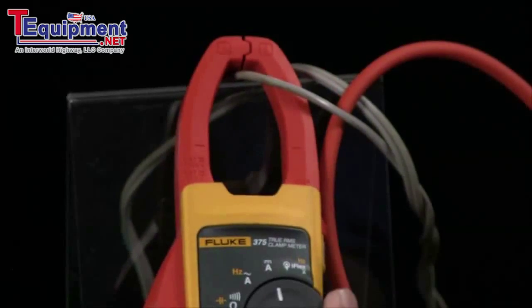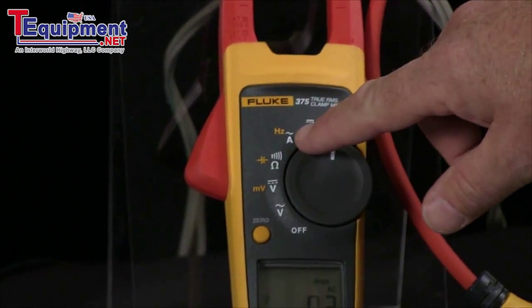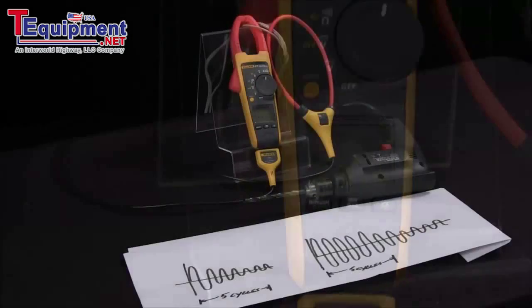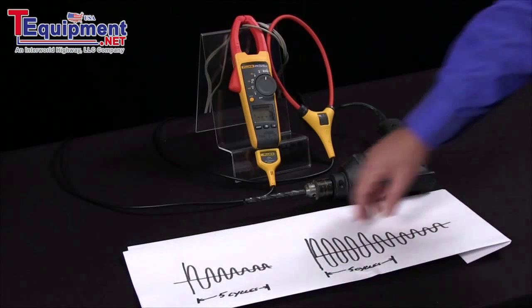To use inrush with iFlex, we simply turn it to the iFlex mode instead of the normal current mode, hit the inrush mode and now we can capture inrush. Fluke has a unique design in that we don't capture